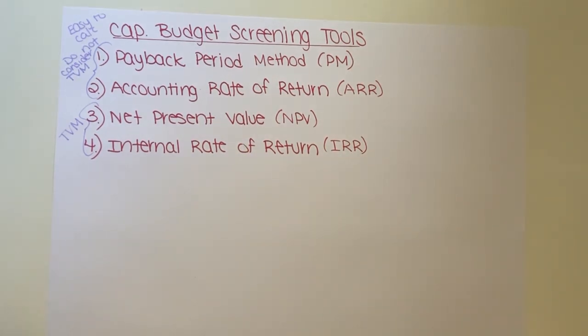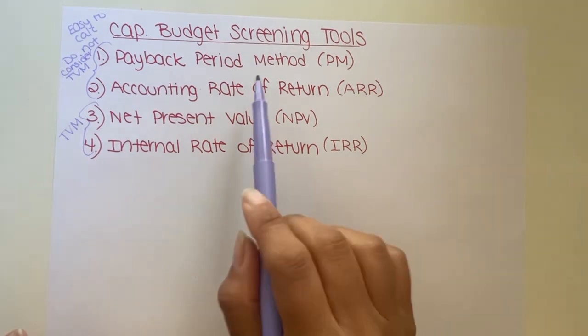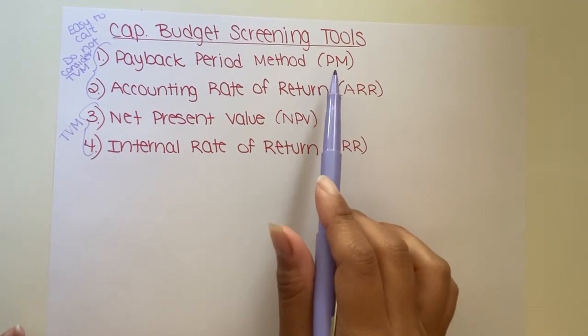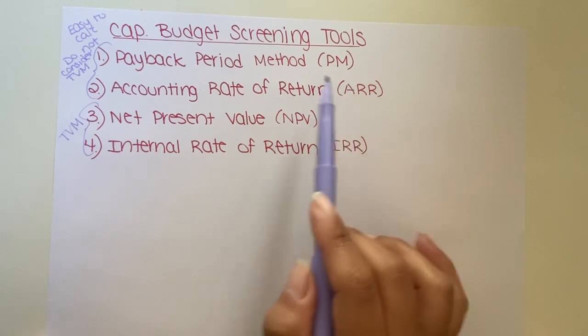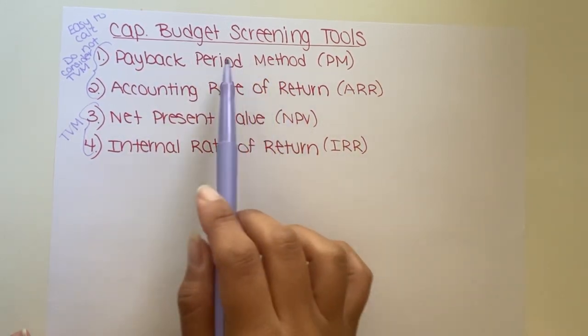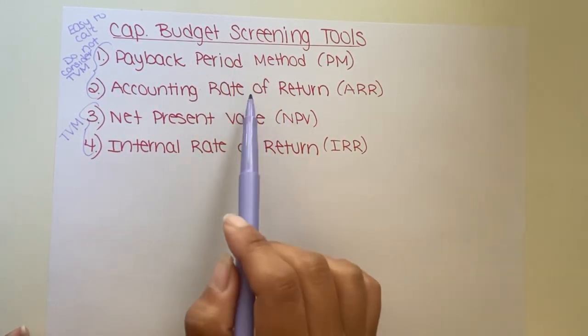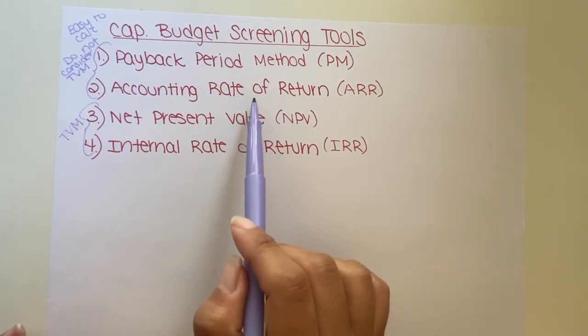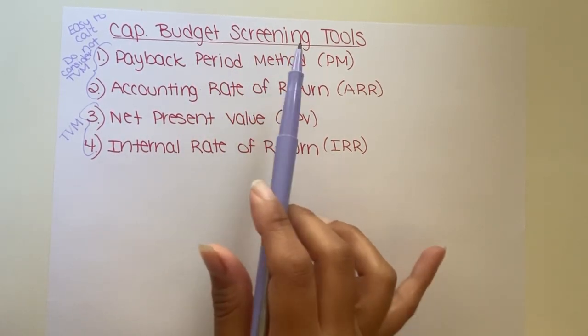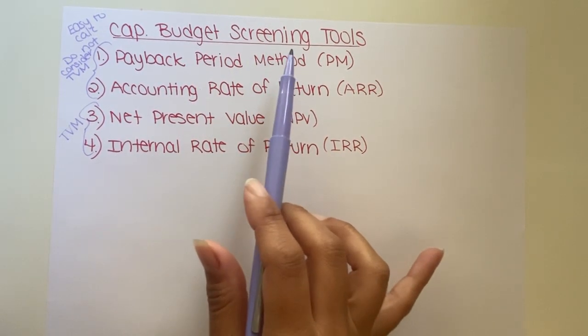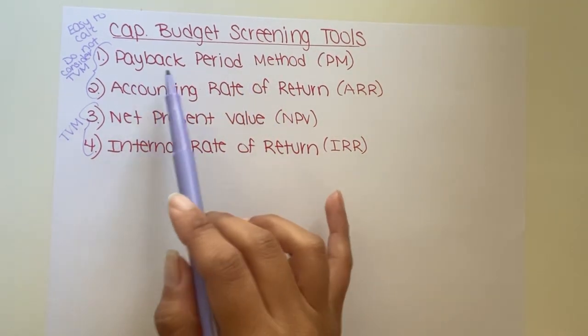For now, we're going to focus on the payback period method. It's usually used as the first screening tool because it's easy to calculate. This one is particularly easy for anyone to understand — unlike the accounting rate of return — and it's expressed in regular terms and quick to calculate.